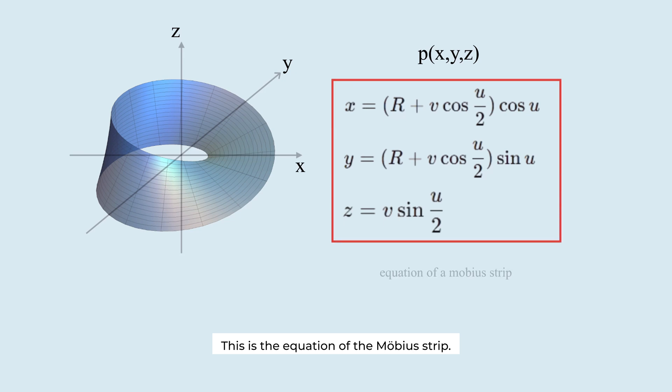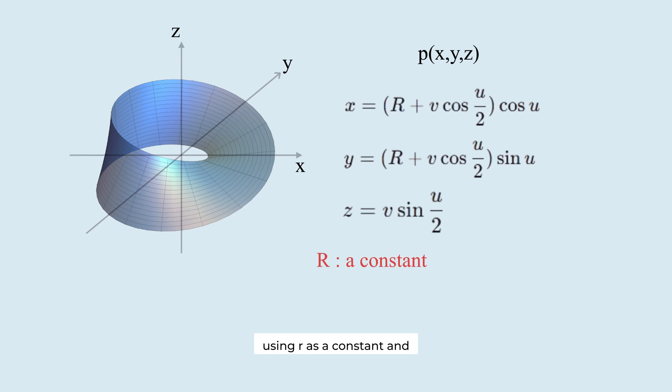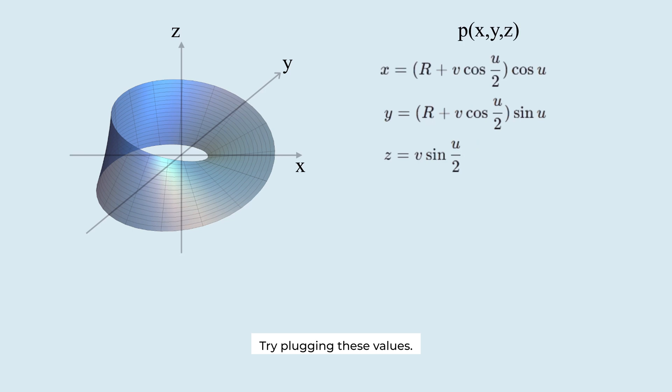This is the equation of the Möbius strip. It defines every point on the strip using R as a constant and u and v as variables. Try plugging these values. The result represents the position and shape of the line.